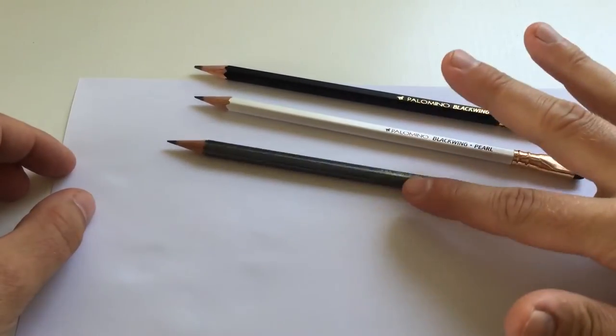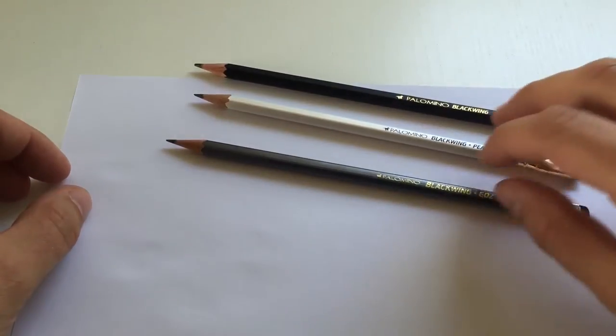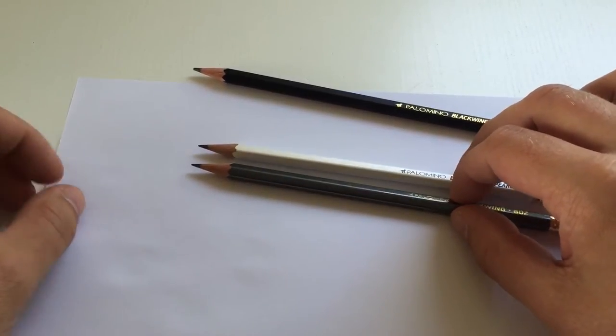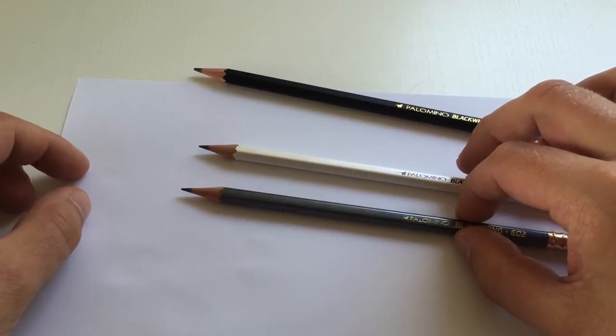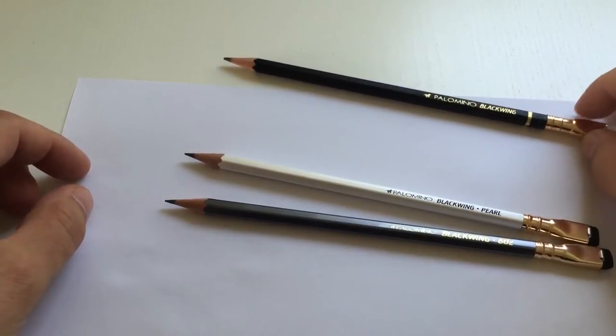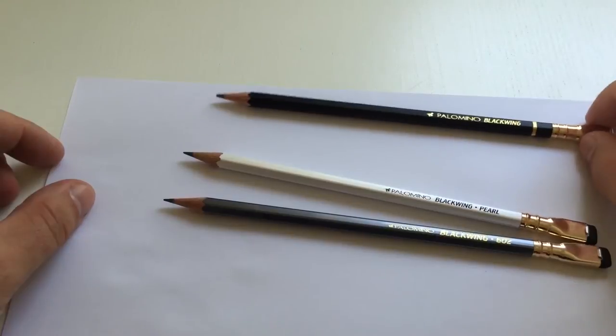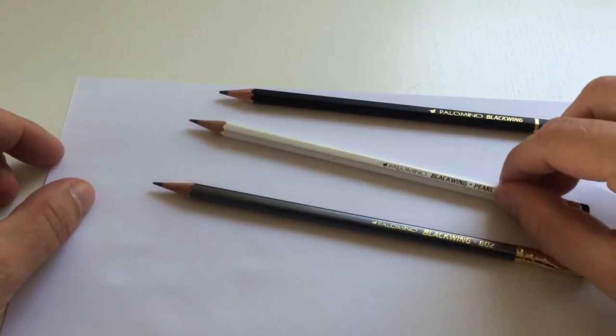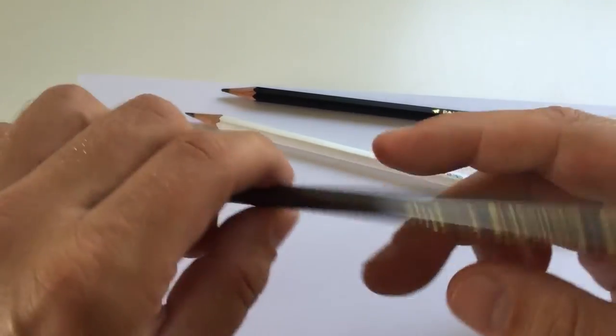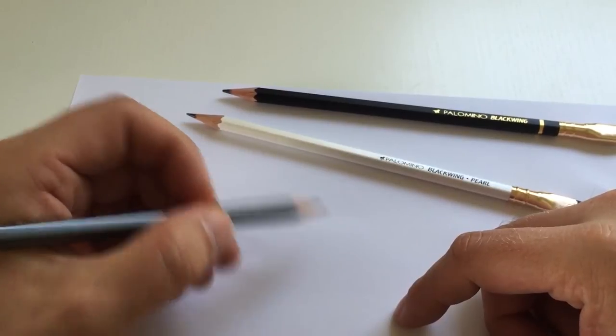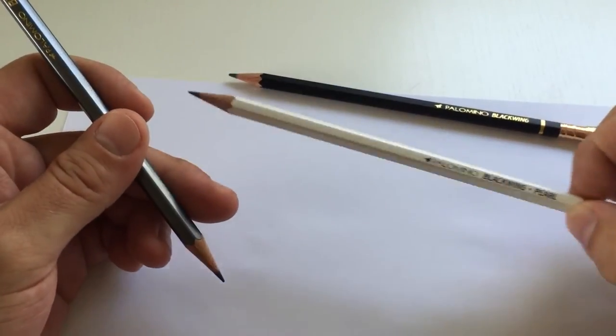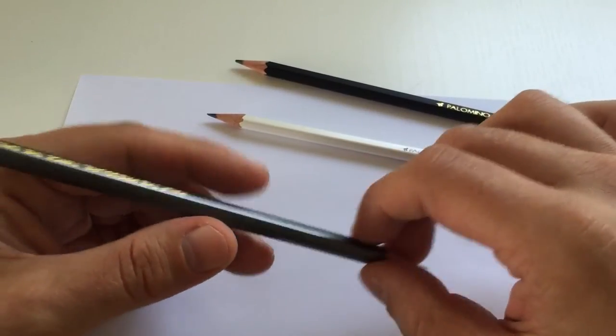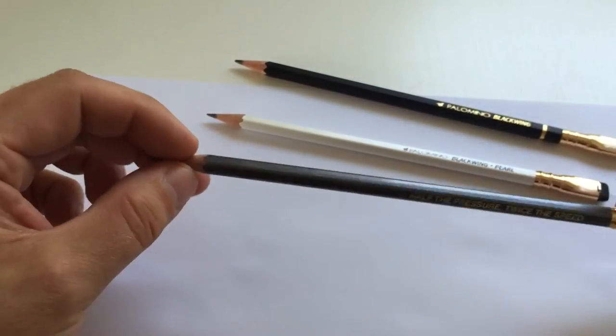Now when it comes to writing, I personally find that the difference between the 602 and the Pearl is pretty hard to tell. I find that quite close actually. The difference between the 602 and the Pearl and the regular Blackwing is quite obvious. You can really tell that when writing, the 602 is a bit harder. All three pencils are really smooth writers, they're rather buttery, really nice smooth writing experience.